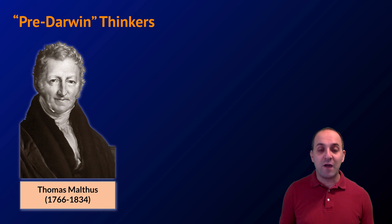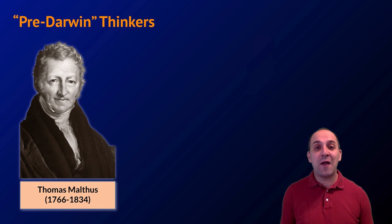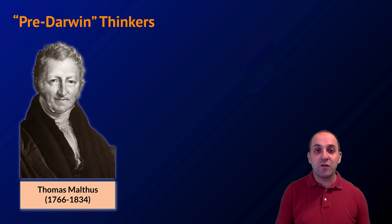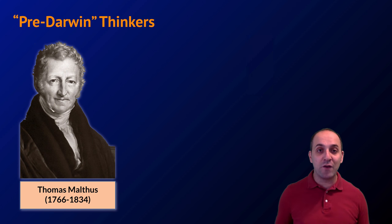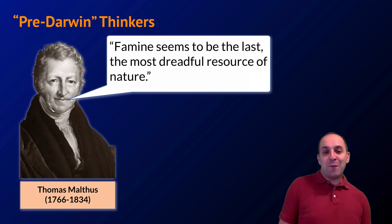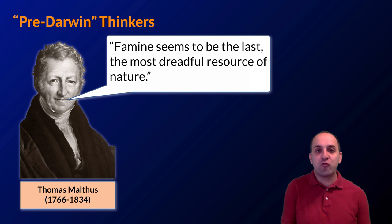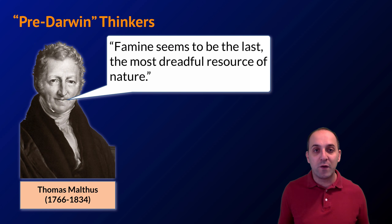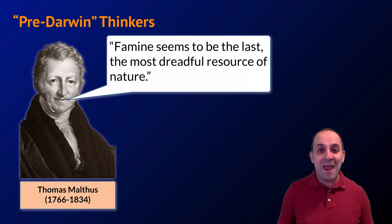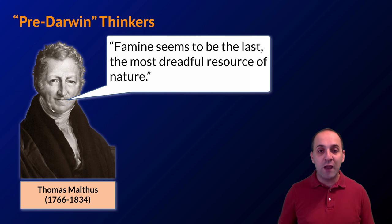Going back before Darwin, we're going to spotlight a couple of thinkers whose work was formative for Darwin's own thinking about evolution. The first is Thomas Malthus. Malthus's main contributions were thoughts about how populations grow over time. He noticed that populations tend to outpace the amount of resources available to support them, writing that famine seems to be the last or most dreadful resource of nature — meaning populations would grow, exhaust all available resources, and then essentially starve. This notion is referred to as Malthusian theory.